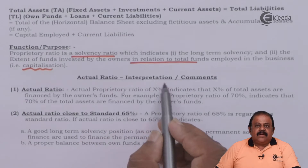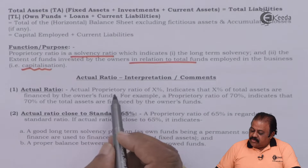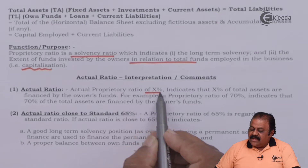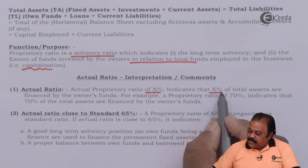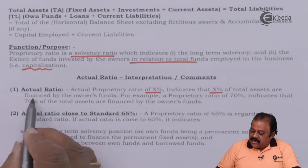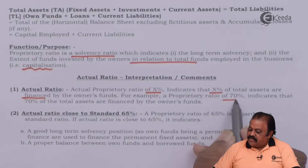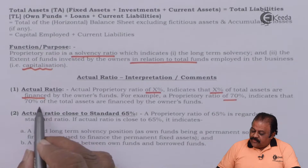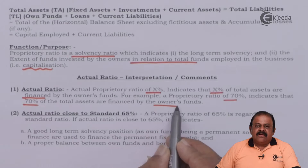Interpretation and comments: The actual proprietary ratio expressed as X percent indicates that X percent of total assets are financed by the owner's fund. For example, a proprietary ratio of 70 percent indicates that out of total assets, 70 percent of the assets are backed by owner's fund.